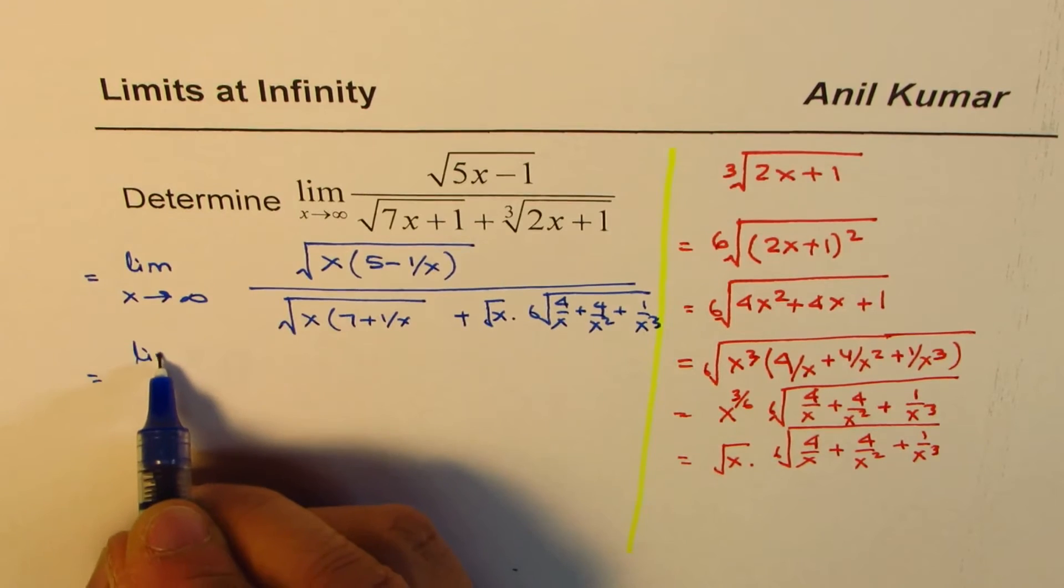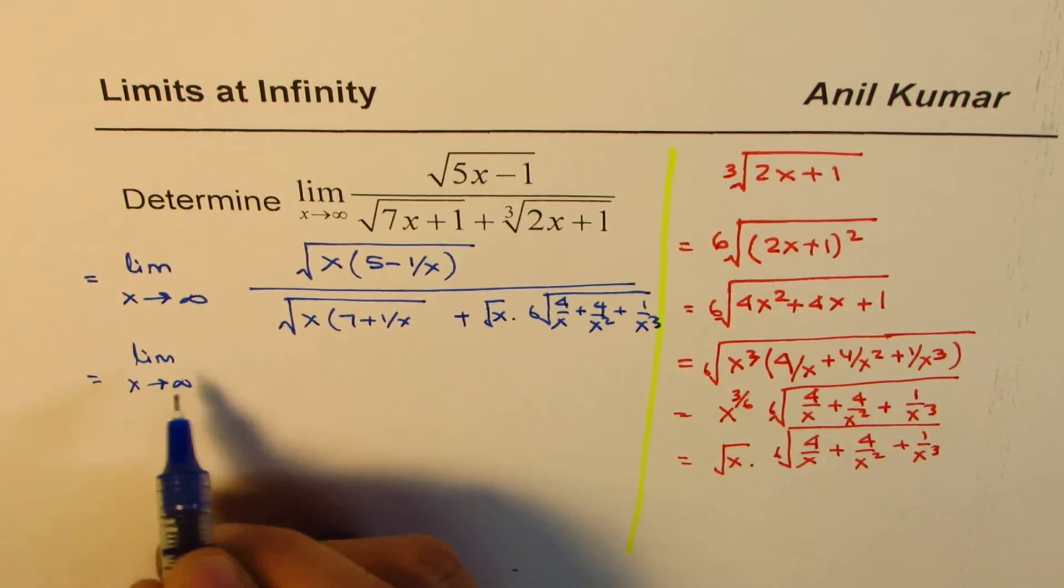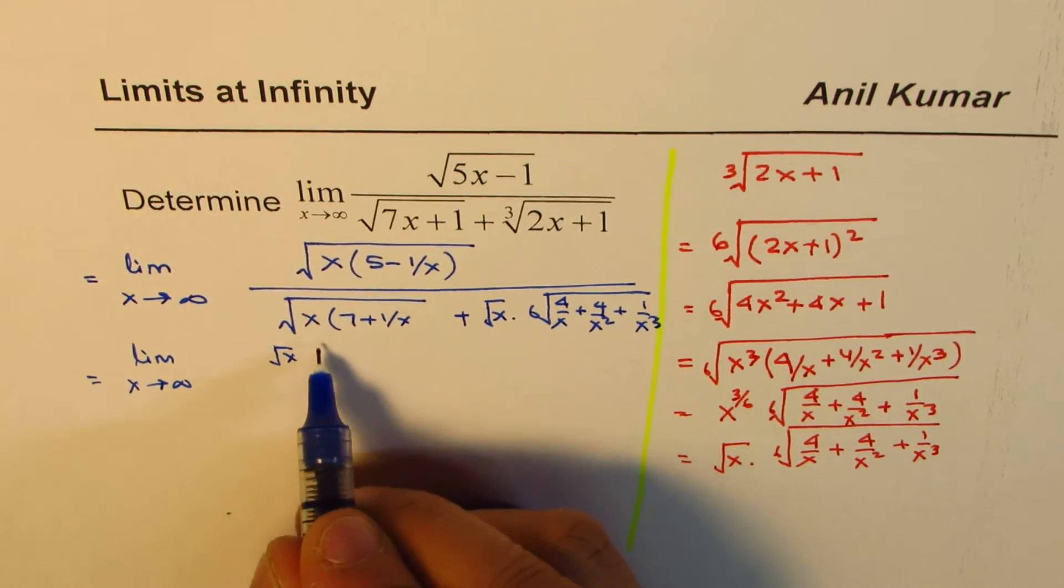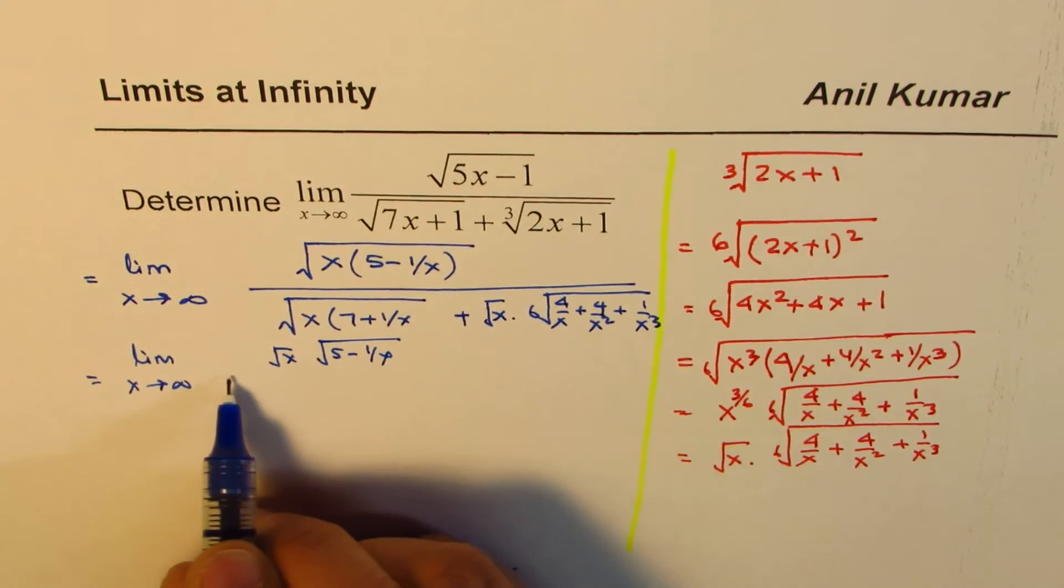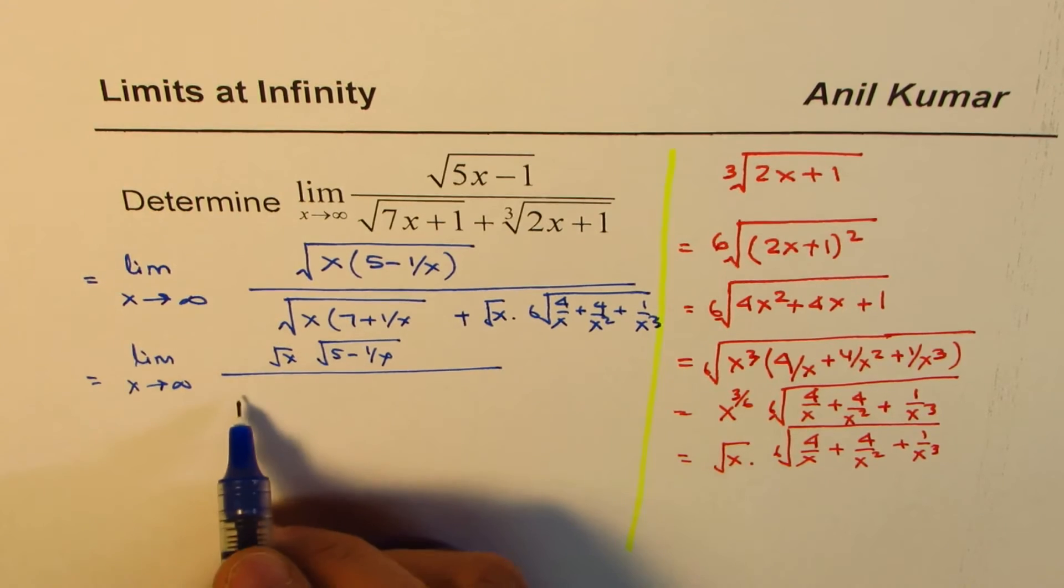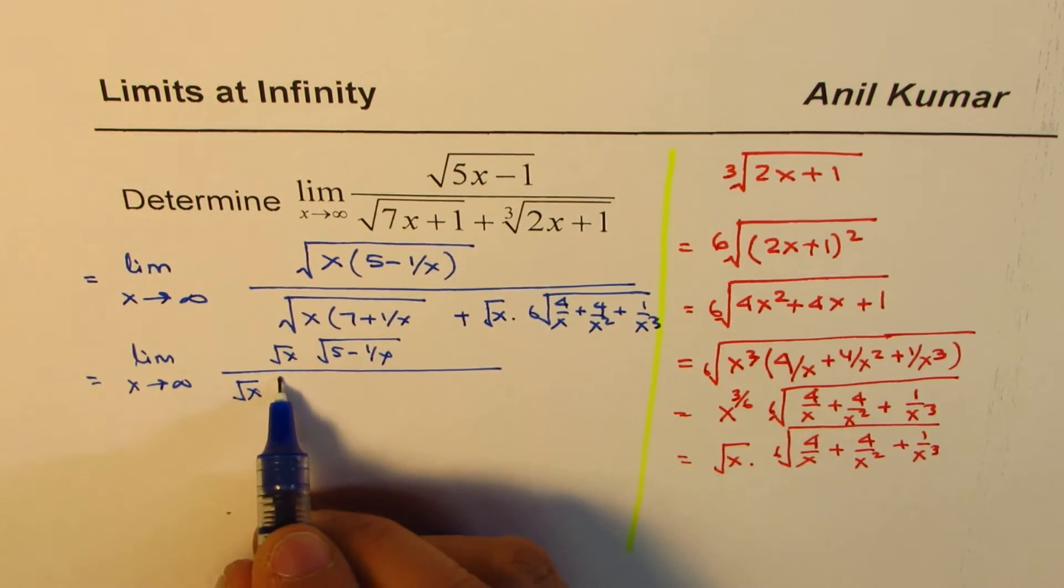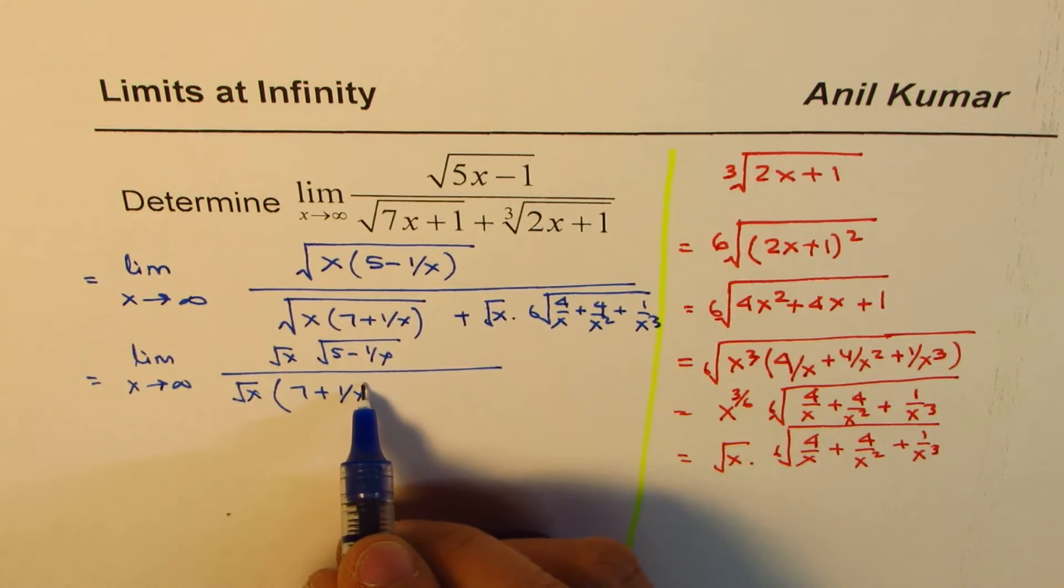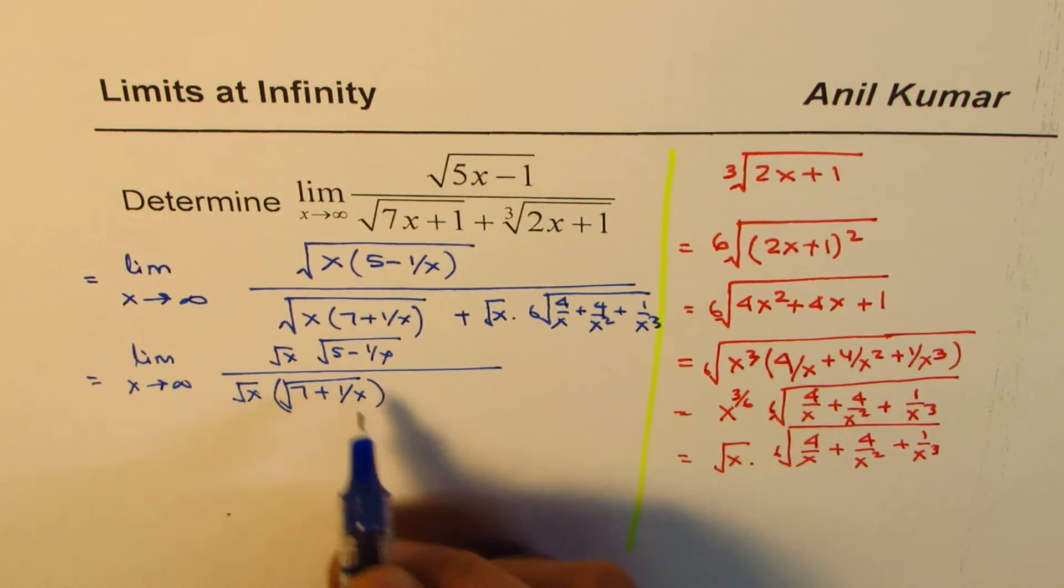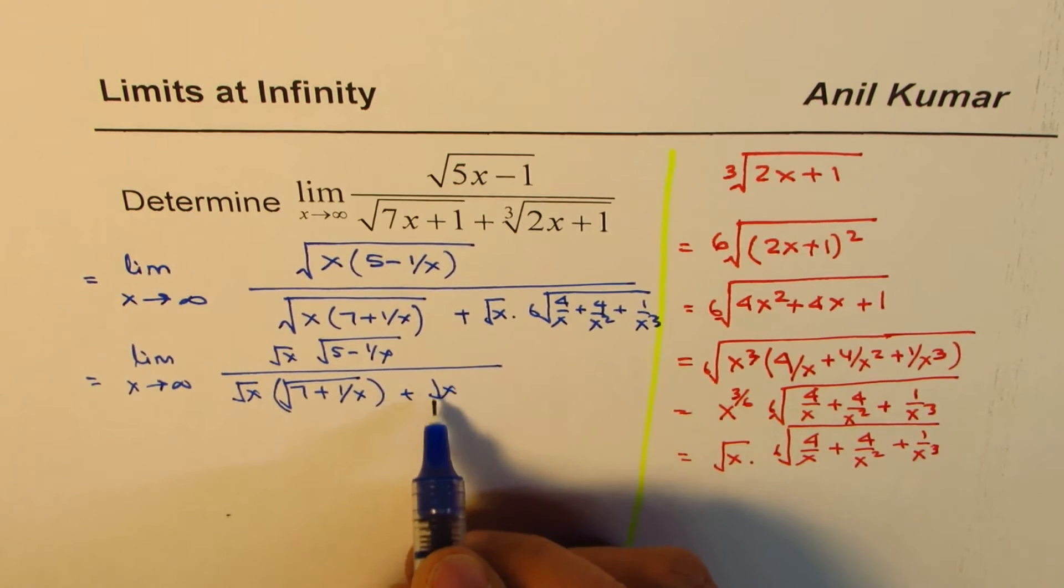So what we have here is limit x approaches infinity. Square root x is common here. And what we have here is 5 minus 1 over x within square root. And here also we have square root x common. And we have 7 plus 1 over x within square root, correct?